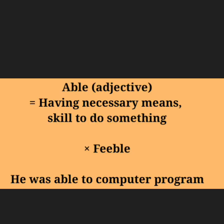Able — adjective. Meaning: having the necessary means or skill to do something. Antonym: unable. Using it in a sentence: 'He was able to computer program.' Another example: 'You are able to learn English.' Related word: ability.